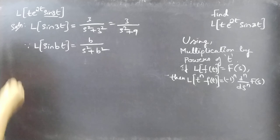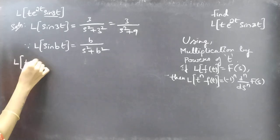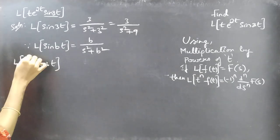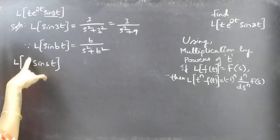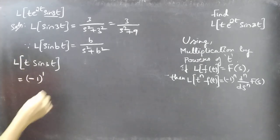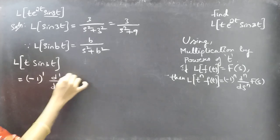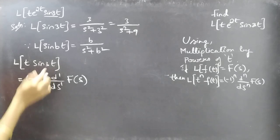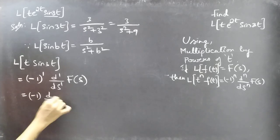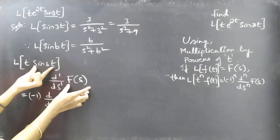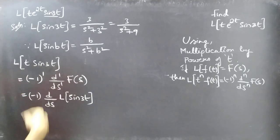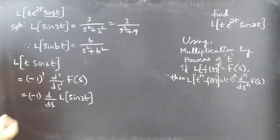Now we'll find L{t·sin(3t)}. Using the multiplication by powers of t formula with n = 1, we get (-1)^1 · (d/ds) F(s), where F(s) is the Laplace transform of sin(3t). This gives us minus 1 times d/ds of F(s), which is 3/(s² + 9). So we replace F(s) with 3/(s² + 9).